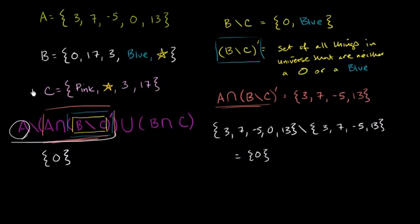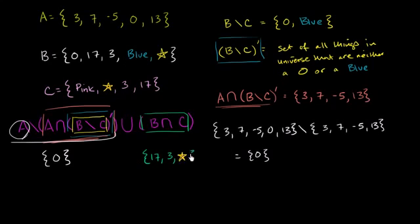Now let's find B intersect C — all the things that are in both B and C. 0 is not in both of them. 17 is in both, so we include 17. The number 3 is in both, so we include 3. Blue is not in both. The gold star is in both, so we include it. So B intersect C is {17, 3, gold star}. Now we take the union of {0} and B intersect C, which gives us the final answer: the set containing 0, 17, 3, and the gold star. And we are done.